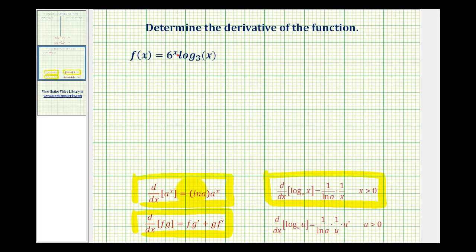Let's start by setting up the product rule. If we call the first function f and the second function g, the derivative will be equal to f times g prime plus g times f prime, or the first function times the derivative of the second function plus the second function times the derivative of the first function.